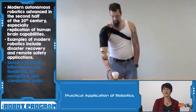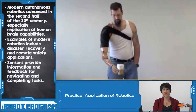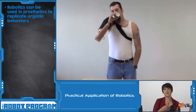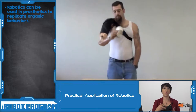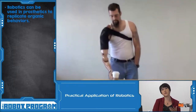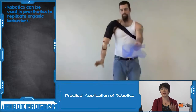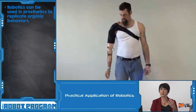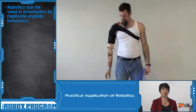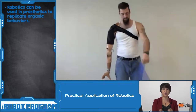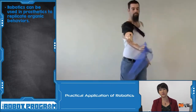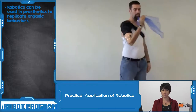Another field is the area of prosthetics. How can we use robotics to mimic or replace parts of the organic human body? We want them to behave in the same way — through arm joints, touch, feel, grasp. How can we replicate all of those things using robotics?